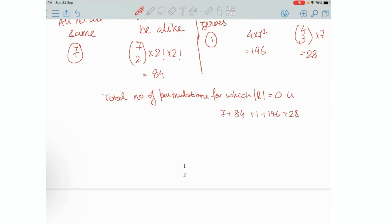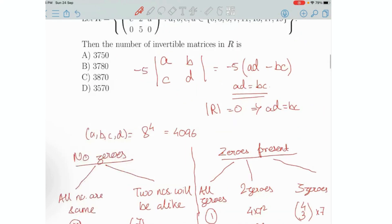So sum it up finally. Total number of permutations for which mod of R equals 0 is 7 plus 84 plus 1 plus 196 plus 28. This sum is 91 plus 1 is 92, 92 plus 196 is 288, plus 28 is 316. So therefore, required answer is 4096 minus 316. That will be 3780. And I hope this is one of the answers, right? Option B.